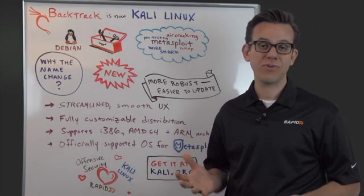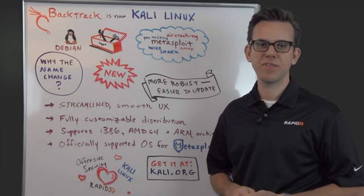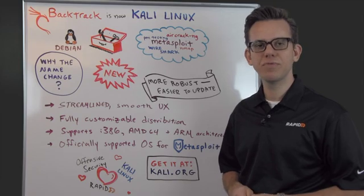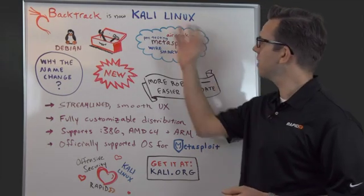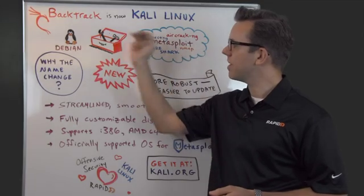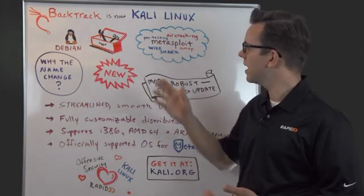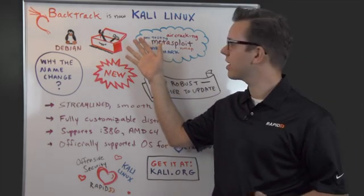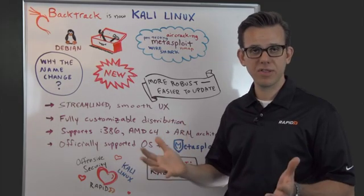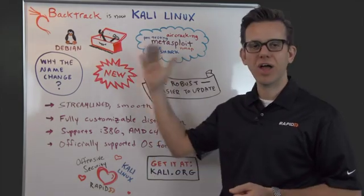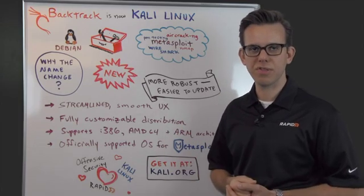You might know BackTrack — some of you might know it really well. The good guys from Offensive Security have issued a new version of BackTrack called Kali Linux. Kali Linux is based on Debian, whereas the previous version BackTrack was based on Ubuntu. For those who don't know BackTrack or Kali yet, it's an open source platform — an operating system, a Linux distribution — that comes with a ton of great penetration testing tools, all preloaded and preinstalled.